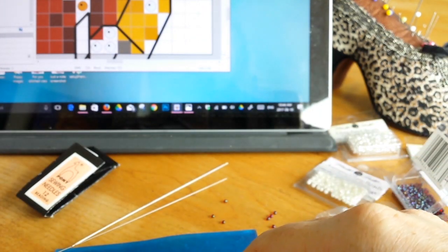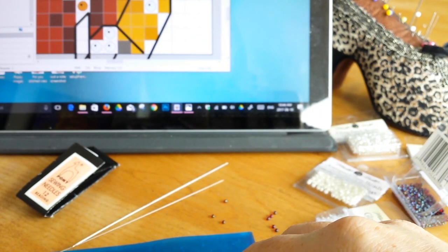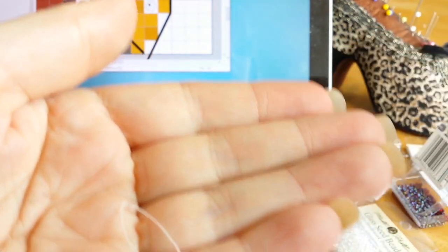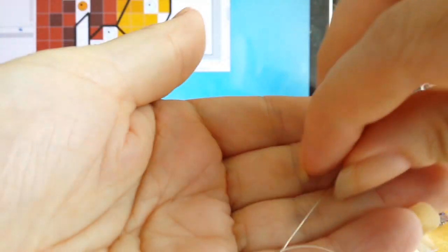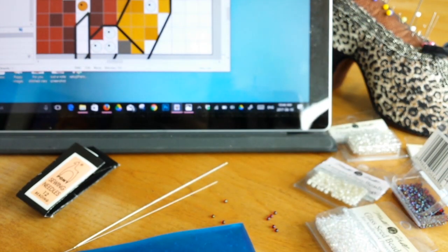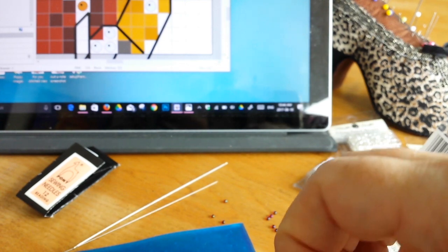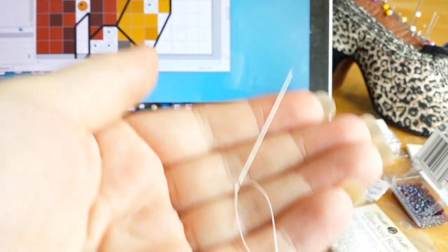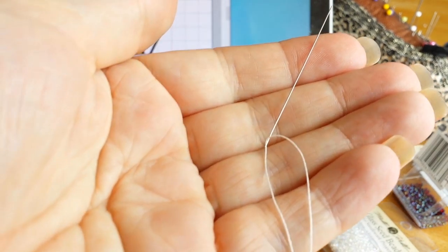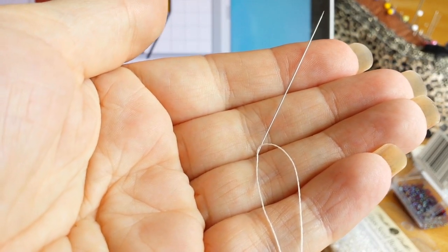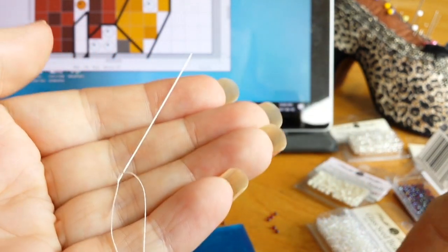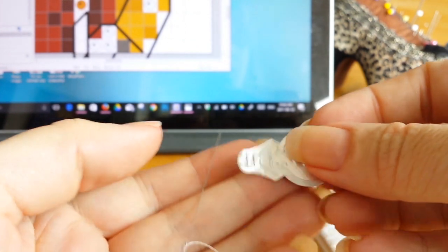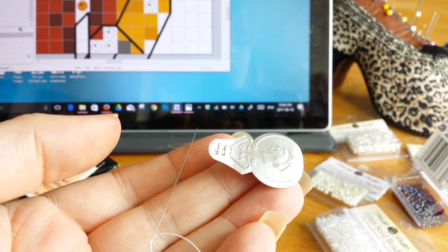And you can also use what's normally used is a proper beading needle. So beading needles are a lot finer and thinner. This one's been threaded with some special cotton I'll show you in a moment. So you can see it's got a really fine eye on it. So what you're going to have to be doing with your little embroidery needle, or this kind of needle, is you're going to have to use a needle threader in order to thread these properly.